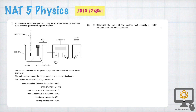Question 8, part 1 from the 2018 National 5 Physics paper is about determining the specific heat capacity of water from these measurements. So let's first of all write down the formula. The heat put in is equal to mass M times C times the change in temperature, C being the specific heat capacity.